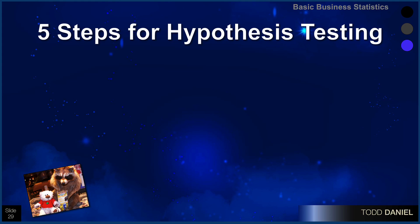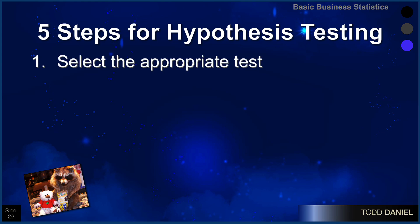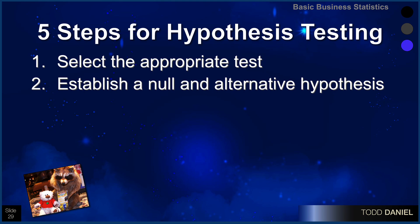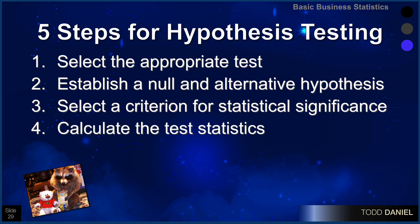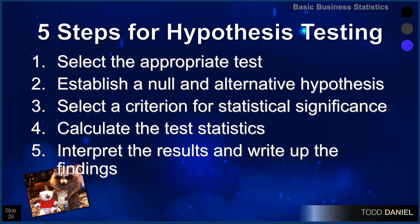The five steps are: Number one, select the appropriate test — we're going to look at our data and determine what type of test we're going to run. Number two, establish a null and alternative hypothesis. Number three, place your bets — select a criterion for statistical significance. Number four, do the math — calculate the test statistic. And number five, interpret the results and write up the findings.